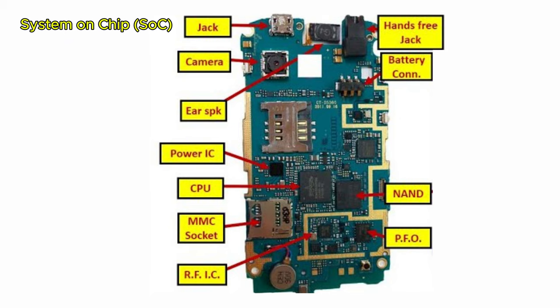The SOC also includes a GPU (graphics processing unit), which manages graphics rendering, crucial for gaming and visual applications; RAM (random access memory), which provides temporary storage for quick access to frequently used data and apps; storage (flash memory), which stores the operating system, apps, and data; and a modem, which allows the phone to connect to cellular networks. The SOC can also integrate Wi-Fi, Bluetooth, GPS, and more — all on a single chip. This compact design minimizes power consumption and allows the device to be thin and lightweight while still packaging enough processing power for modern applications and multitasking.